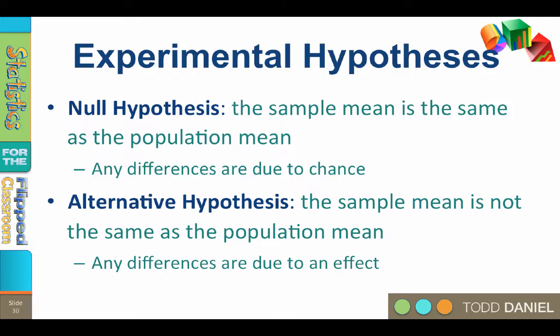We will examine whether the sample mean differs from its population mean. The sample mean will always differ from the population mean if you go out to enough decimal places. But any time a sample mean differs from its population mean, there are two possible explanations: A, the sample mean still represents the population mean, although it may be a poor representative, or two, the sample mean represents a different population — also known as an effect.